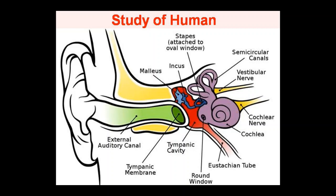The first component is the pinna. The second is the external auditory canal — it is a tube that connects the outer ear to the middle ear, going inward from the outer ear toward the middle ear.